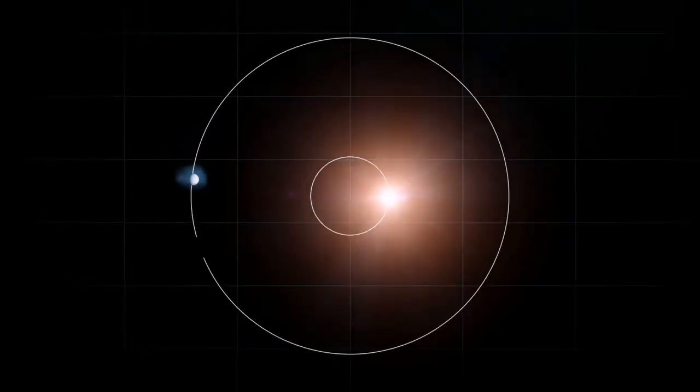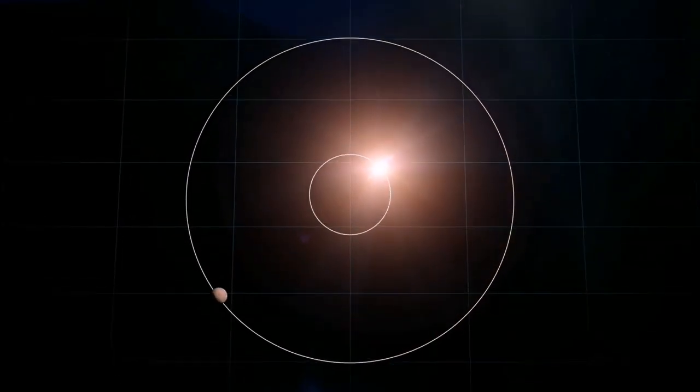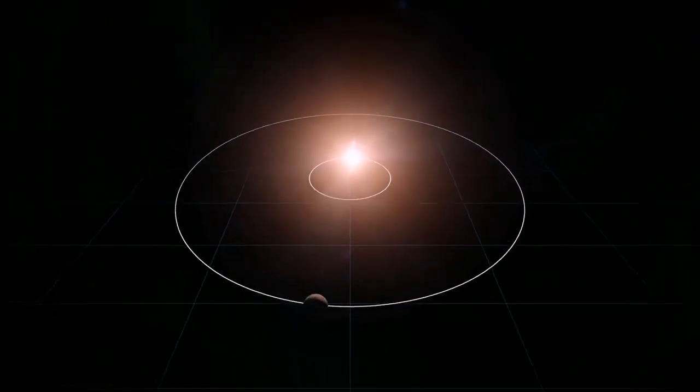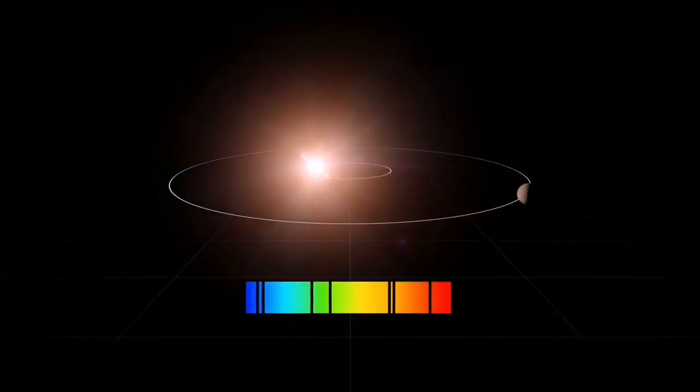Before talking about that planet, let's talk about that star system. The name of the star system is GJ357, which is an M-type dwarf and is about one third of our sun's mass.